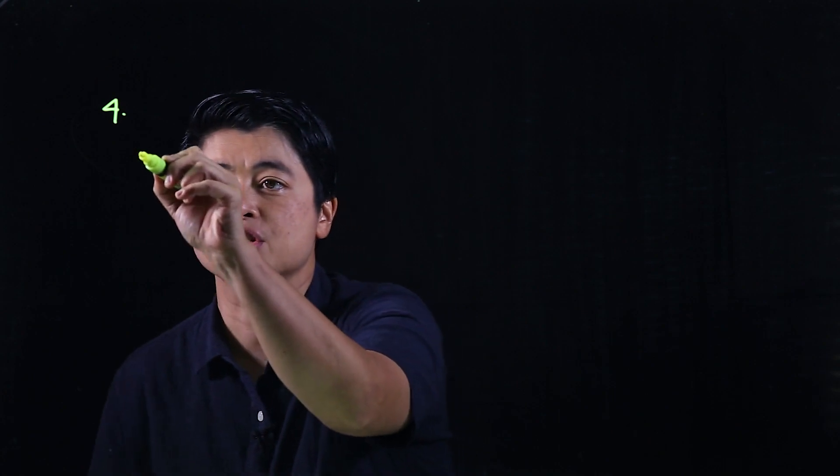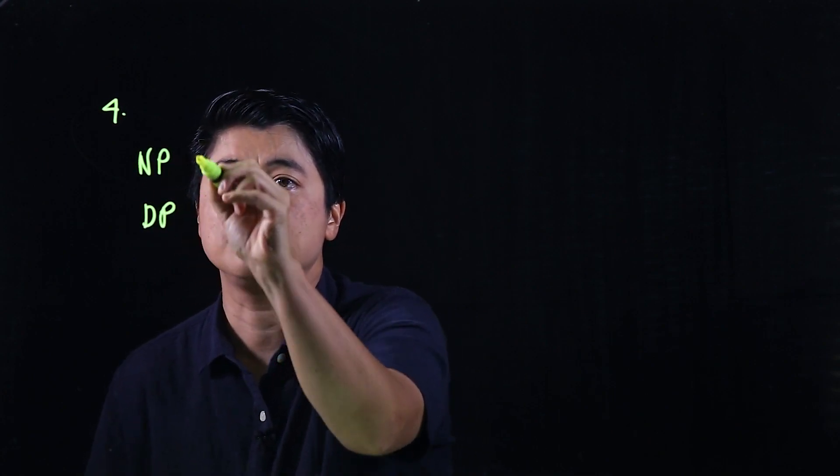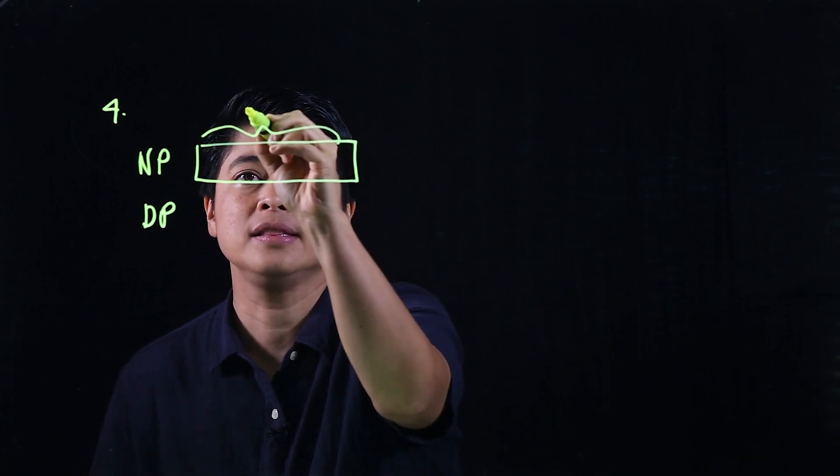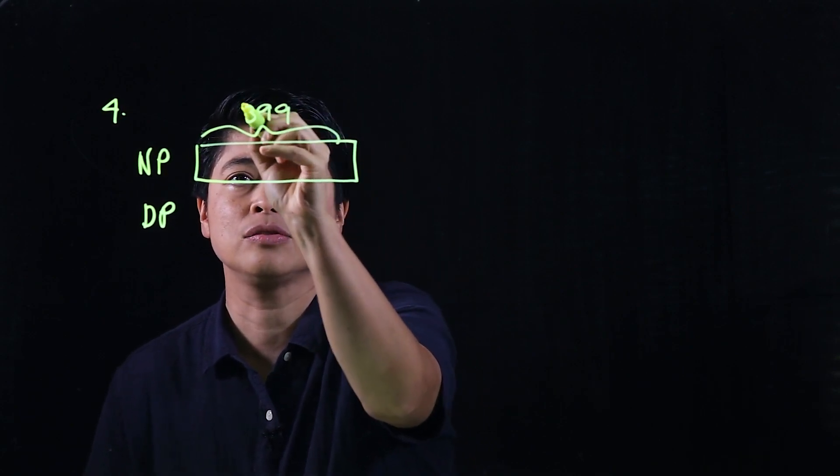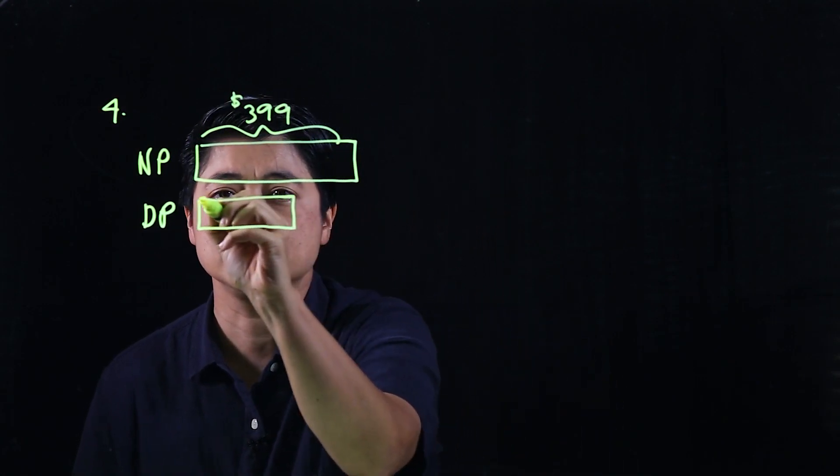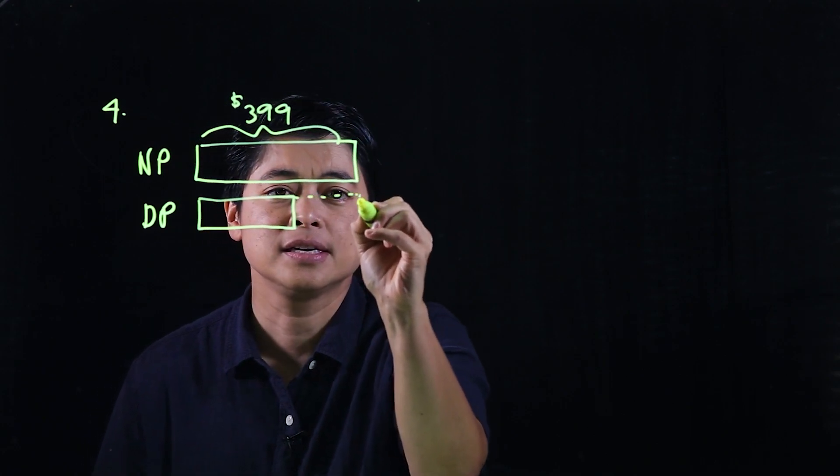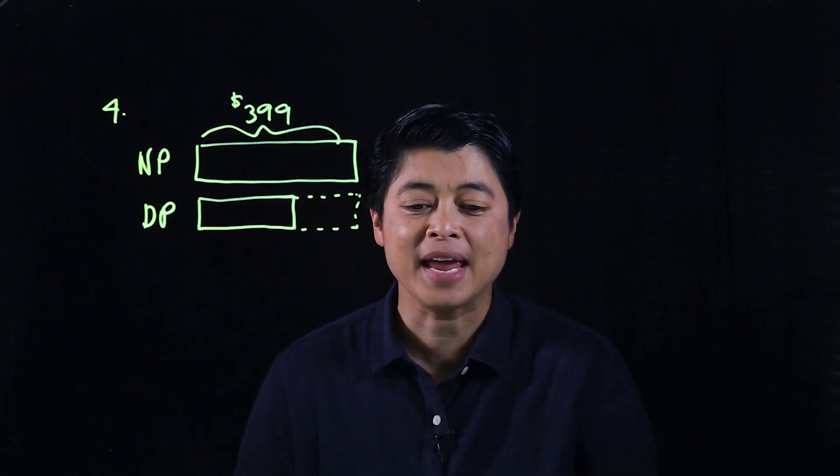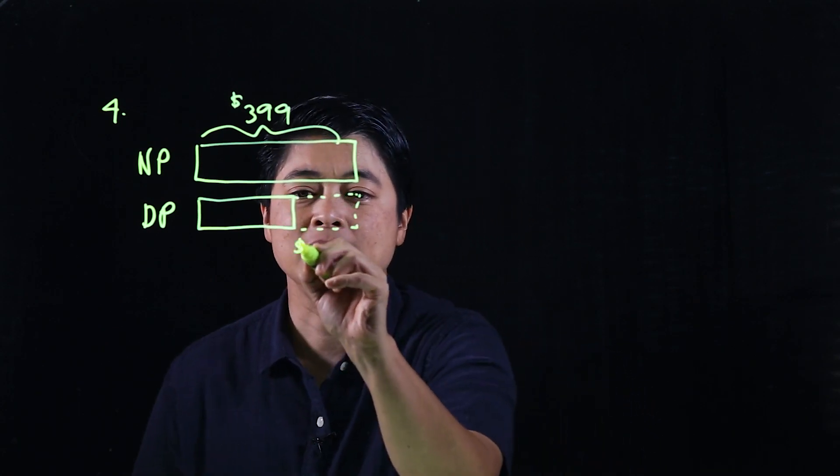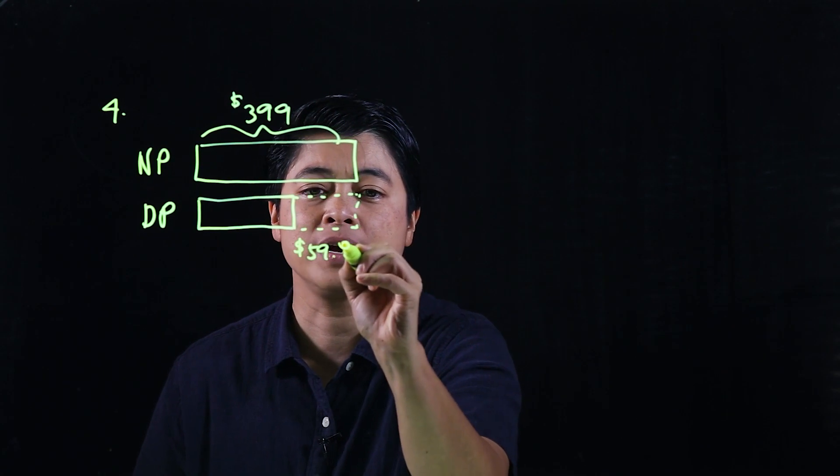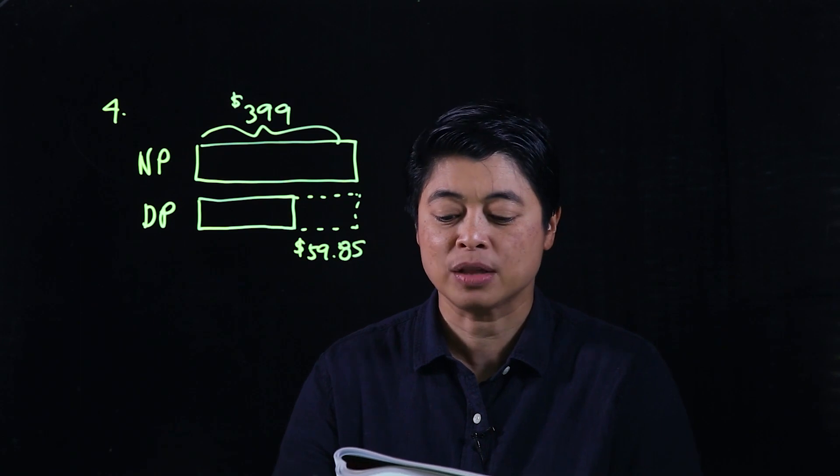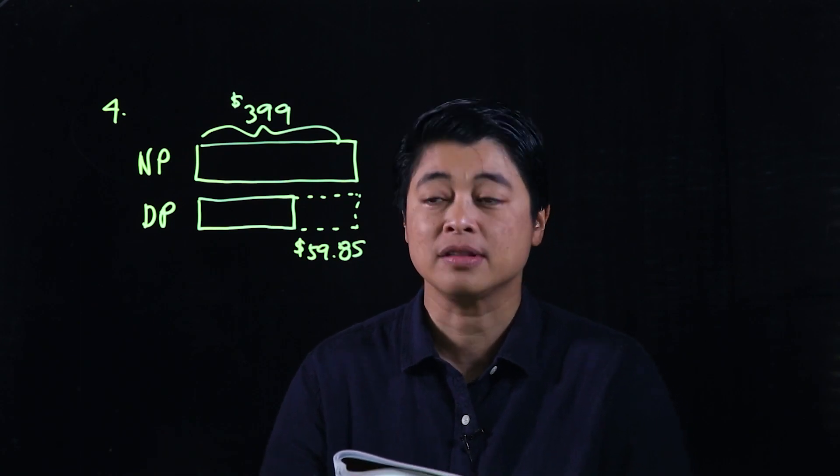So this is normal price, discounted price. The normal price is $399. Okay, and then the discounted price, and this was the discount. And since she paid $59.85 less, then that means this, the 59.85 is the discount. Okay, so the question is, what was the percentage discount given to her?